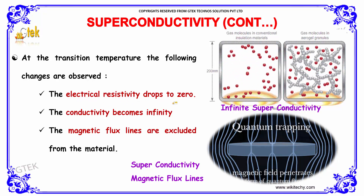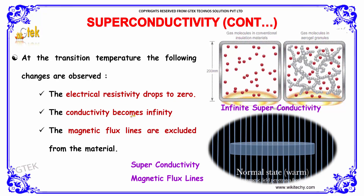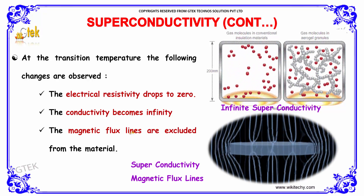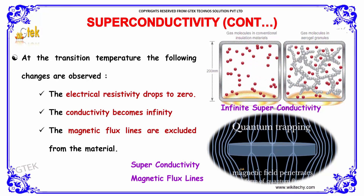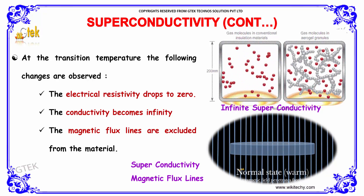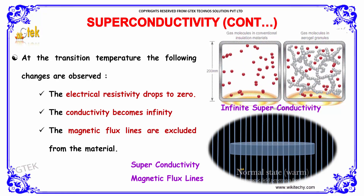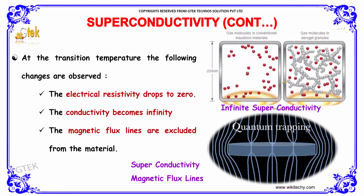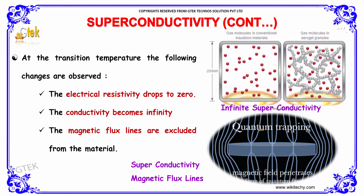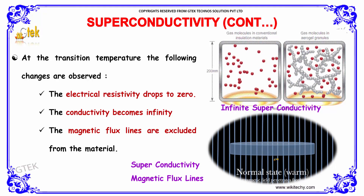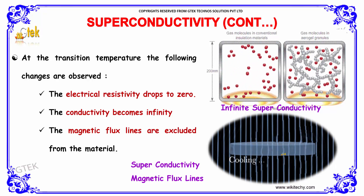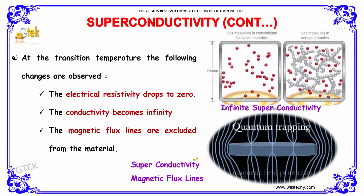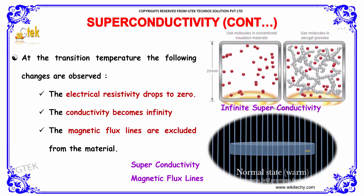At the transition temperature, the following changes are observed: the electrical resistivity drops to zero, the conductivity becomes infinity, and the magnetic flux lines are excluded from the material. I'm showing the superconductivity stages here — the normal stage, the cooling stage, and the stage where magnetic flux becomes excluded from the material.